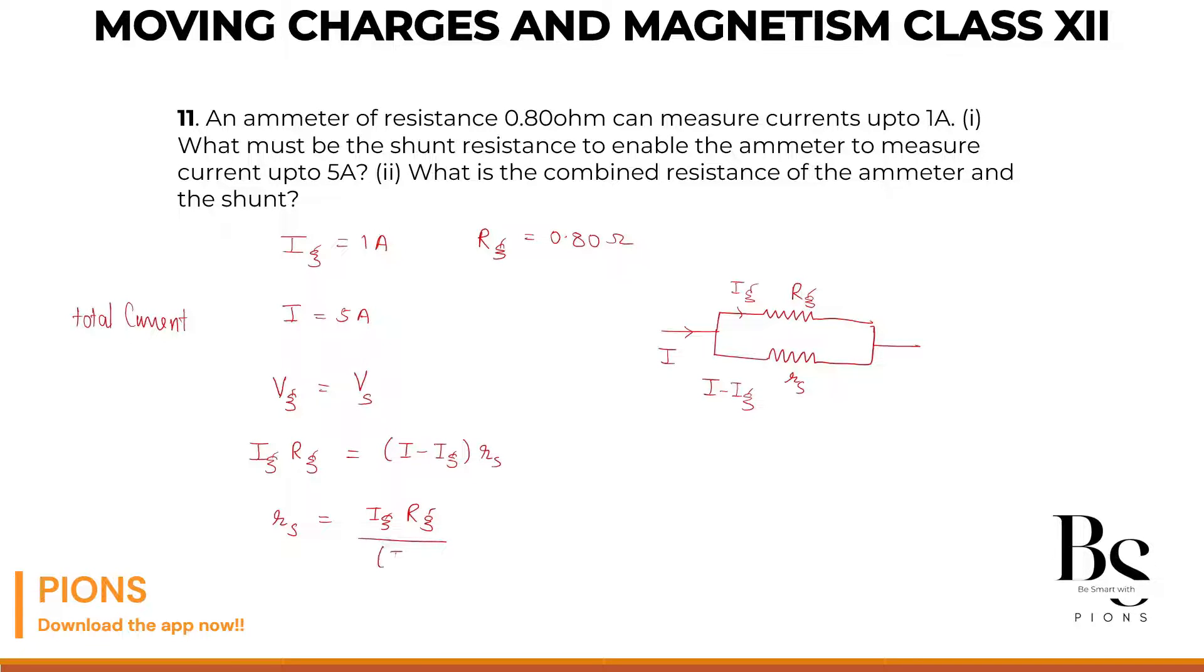Very simple concept. So what is IG? Current across the galvanometer is 1. What is the resistance of the galvanometer initially? 0.80, divided by I minus IG. So I is the total current in the circuit, 5 minus IG, which is 1. So this will equal 1 times 0.80, which is 0.80, divided by 5 minus 1, which is 4, equals 0.20 ohms. That must be the shunt value.